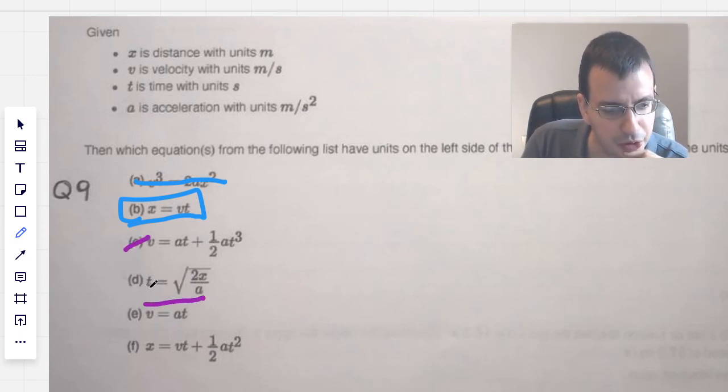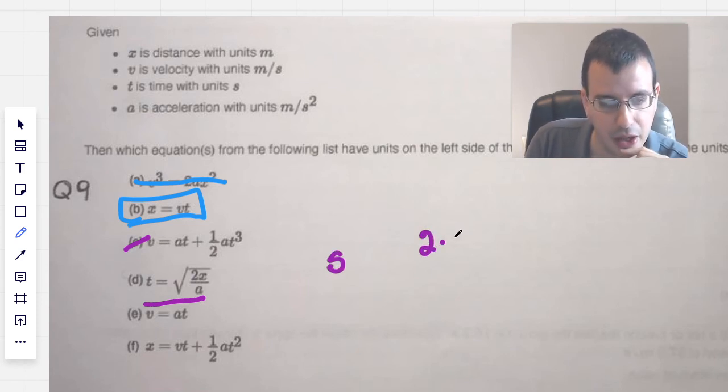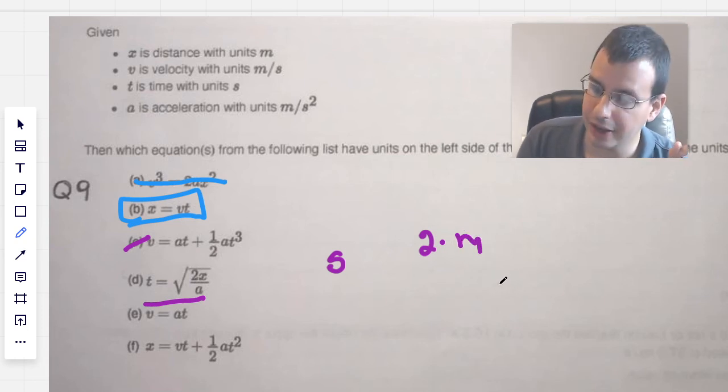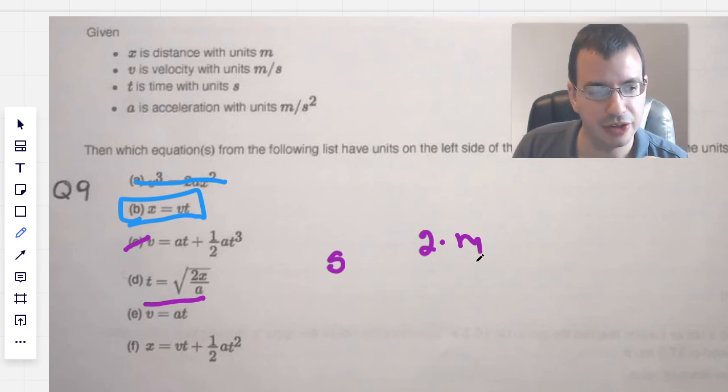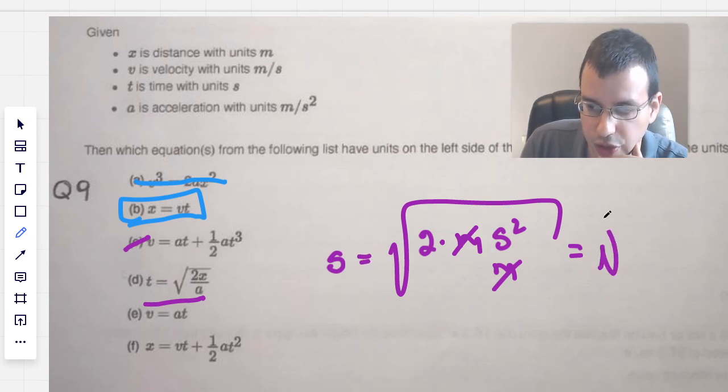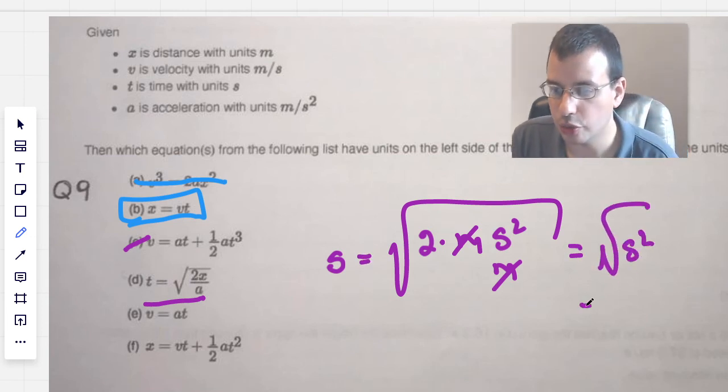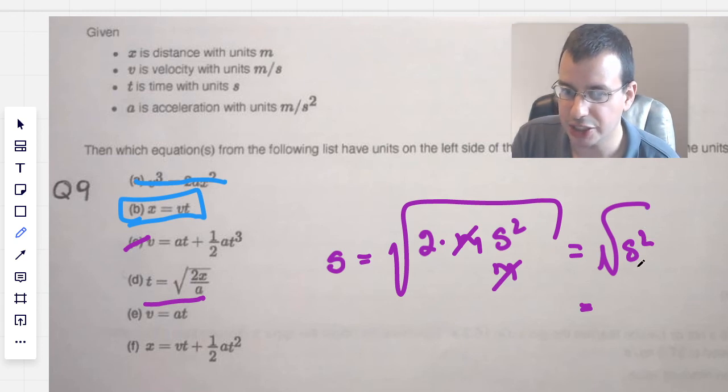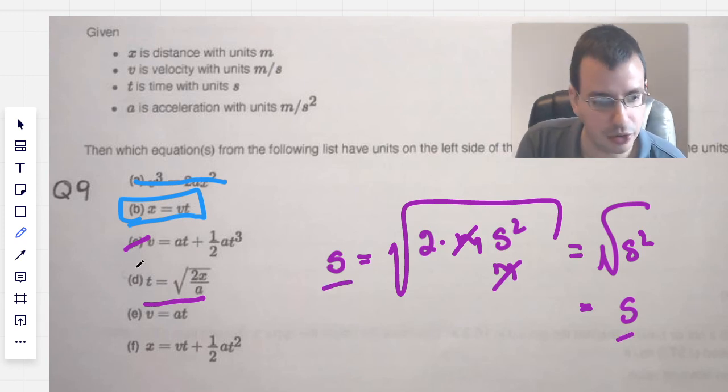So T on the left side will be seconds. And then we have 2 times m for meters times divided by meters per second squared. And when you divide by a fraction, you multiply by the reciprocal. So that's going to be meters per second squared. And this will be square rooted. So the meters cancel and left with square root of s squared. And the way you do the square root is you divide the exponent by 2. So in this case, it will be s to the first. So it will just be s. Equals equals. So yes. This one's good. Check.